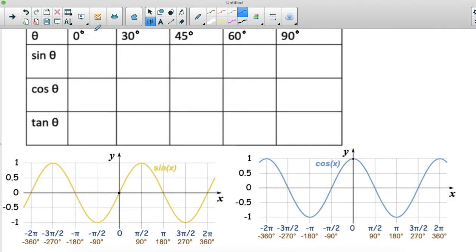In radians we should be aware that those are zero, pi over six, pi over four, pi over three, and pi over two. And we need to be able to convert between those.